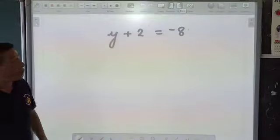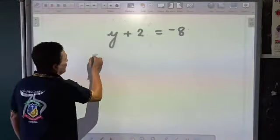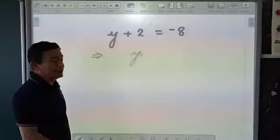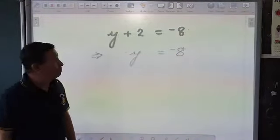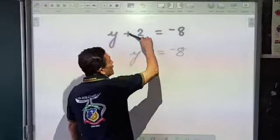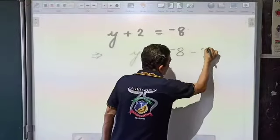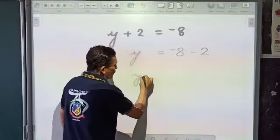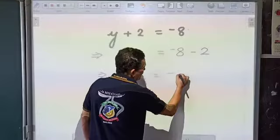You can have a look at this. Y plus 2 is equal to minus 8. So I will have to leave the y alone on the left hand side, which means I already have minus 8 here. So this plus 2 is going to the right hand side, so it becomes minus 2. Therefore y will be equal to minus 8 minus 2, which is going to give us minus 10.